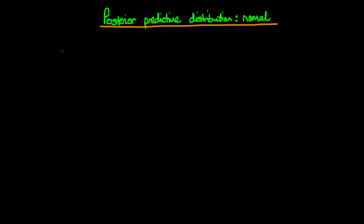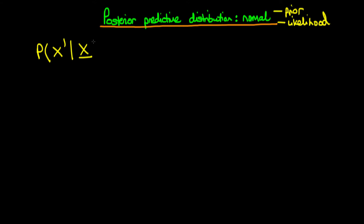In this video, I want to derive the posterior predictive distribution for the case of a normal prior density and a normal likelihood function. The case is pretty similar to that of the prior predictive distribution, although what we're trying to obtain here is the probability of a new observation, which I'm going to call x-primed, given that we've observed a vector of observations x. So x-primed might be the test score of an individual in a new class, and x-underbar represents a vector of observations — the test scores of all individuals in our current class.